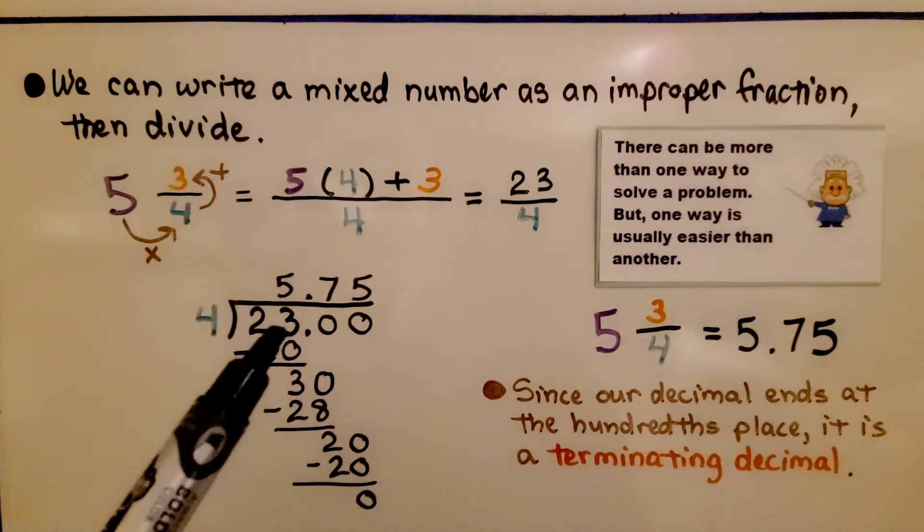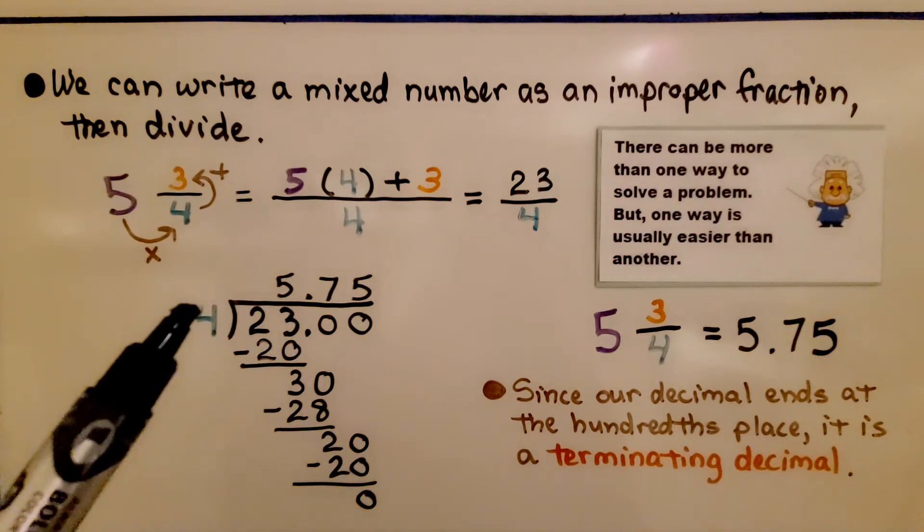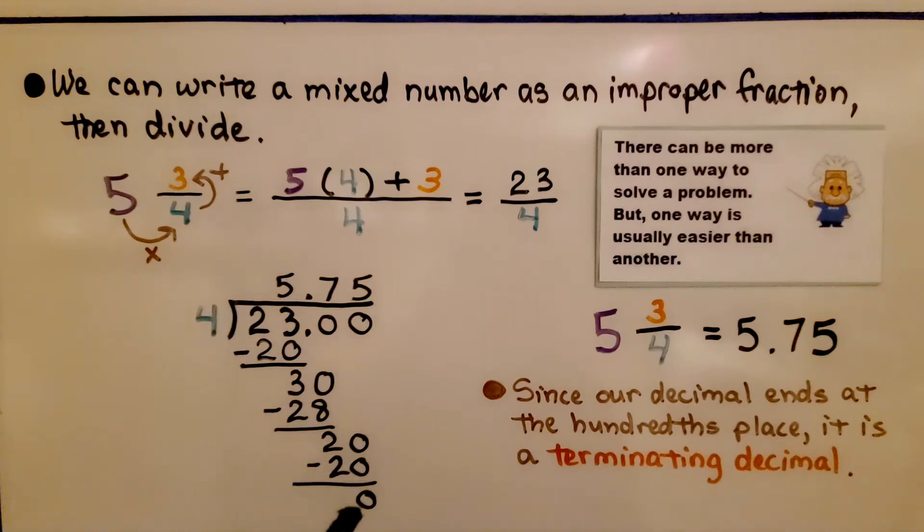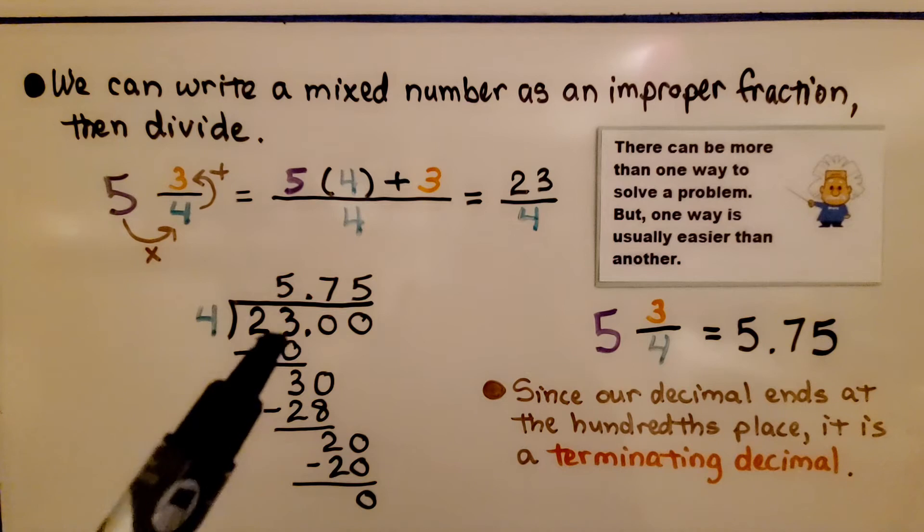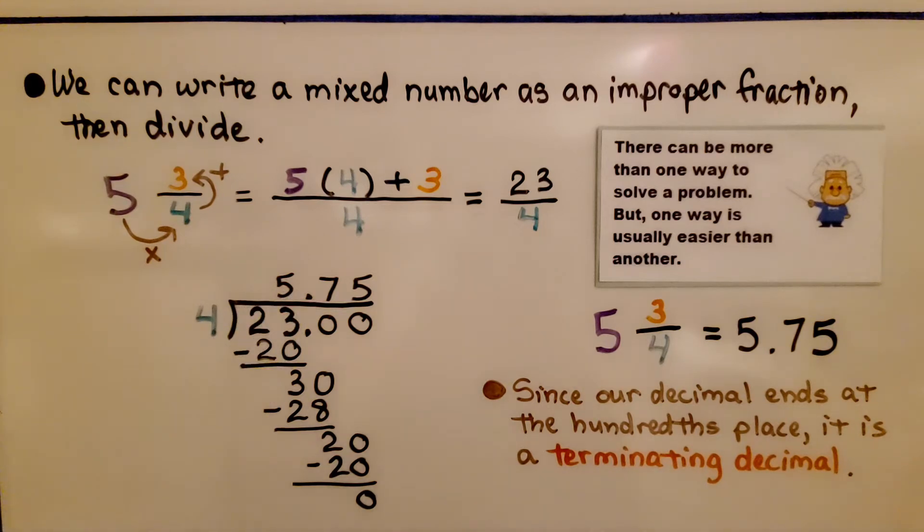Now we divide 23 divided by 4. We do our long division until we get a zero remainder or the numbers start to repeat. And we get 5 and 75 hundredths.